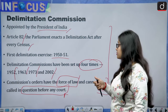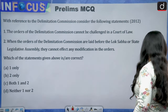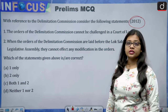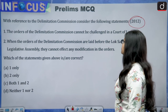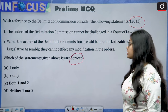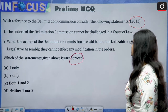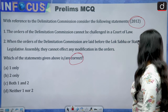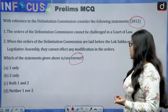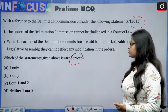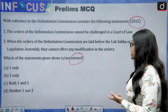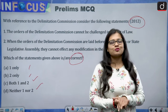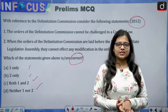For a prelims MCQ — a previous year question from 2012 — with reference to the Delimitation Commission, consider these two statements: first, the orders of the Delimitation Commission cannot be challenged in a court of law; second, when the orders of the Delimitation Commission are laid before the Lok Sabha or state Legislative Assembly, they cannot affect any modification in the orders. The options are: only one, only two, both one and two, or neither one nor two. Give your answer in the comments!